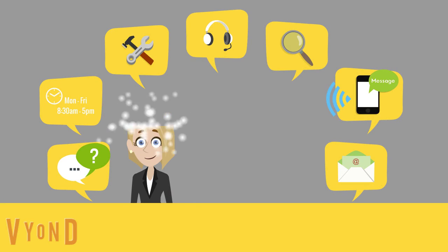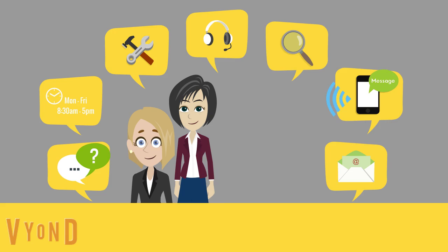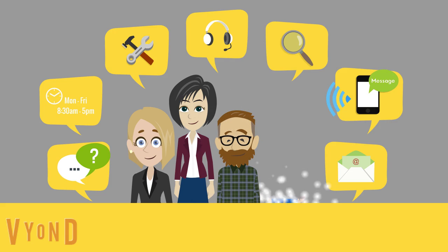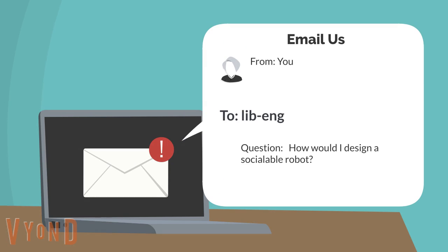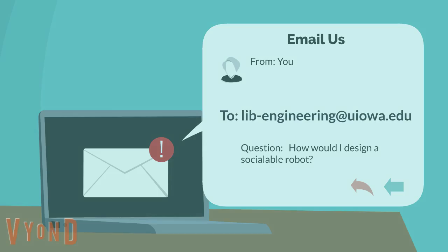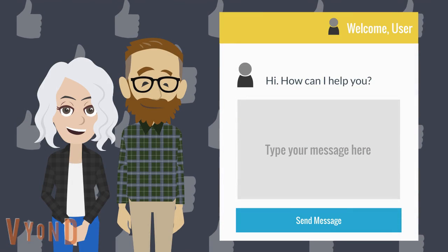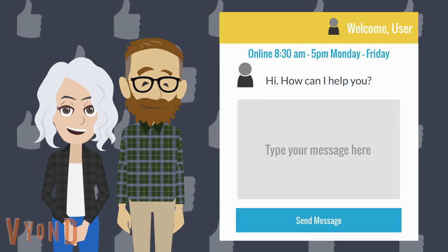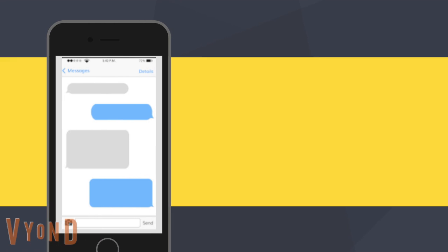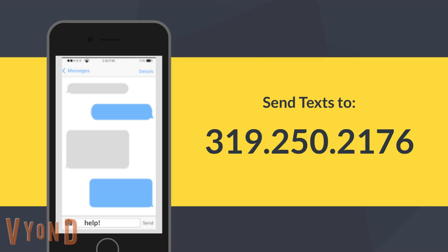If at any point you have any questions or want to know more information, please be sure to reach out to the Lichtenberger Engineering Library staff. We are here for you. We can be reached by email at lib-engineering@uiowa.edu, or we can be reached by online live chat. The online chat is open from 8:30 a.m. to 5 p.m., Monday through Fridays. You can also text us your questions at 319-250-2176.